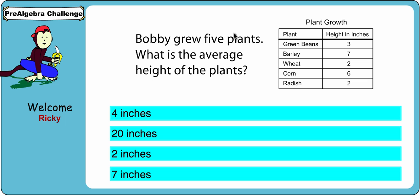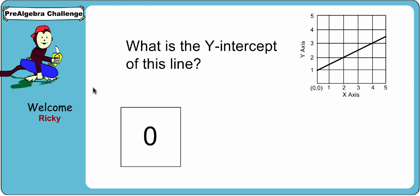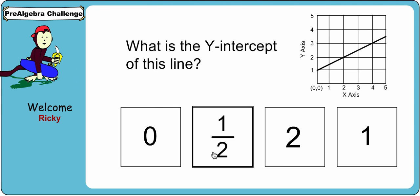So here, we see a standard word problem. Students would select the answer and click on it. Here is another one trying to choose the y-intercept of a line.